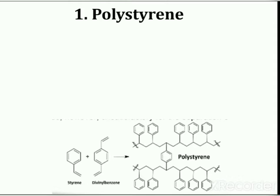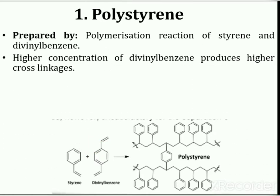Polystyrene. Here you can see the structure of polystyrene. Polystyrene resin is prepared from the polymerization reaction of styrene and divinylbenzene. Higher concentration of divinylbenzene produces higher cross-linkage. If a higher concentration of cross-linking agent produces high cross-link density, it results in additional network formation taking place.